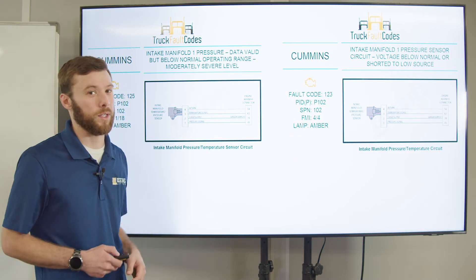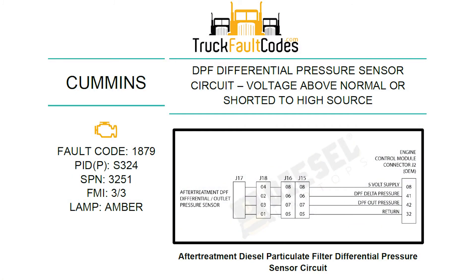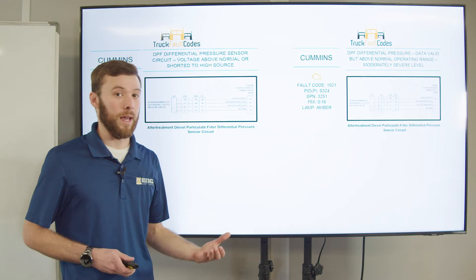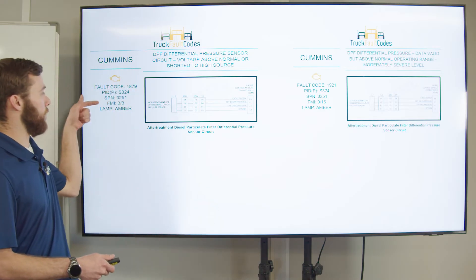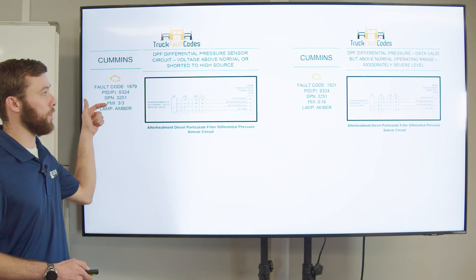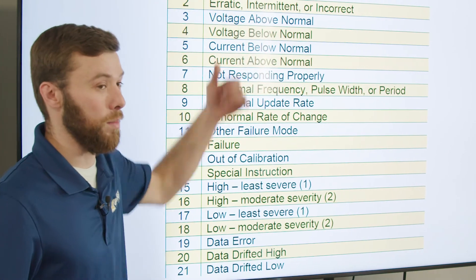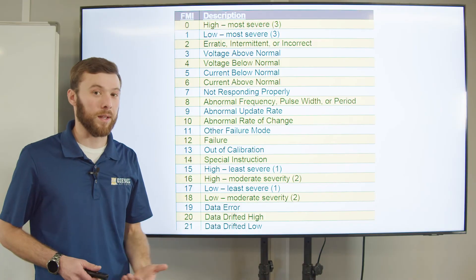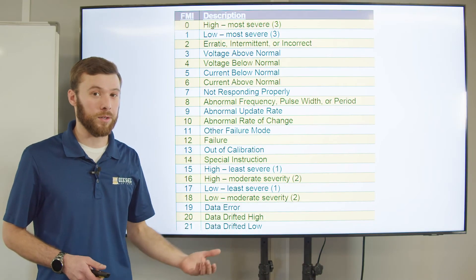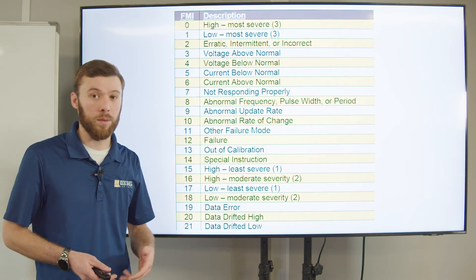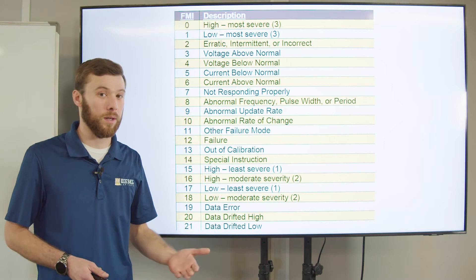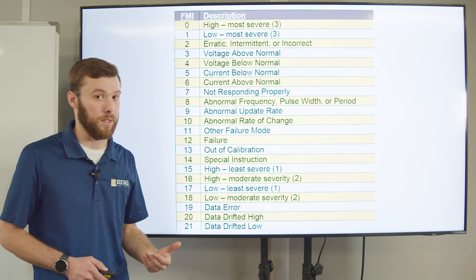Let's look at a few more examples. Here we have DPF differential pressure sensor circuit — 'voltage above normal or shorted to a high source.' When we look at that, we can look at the FMI, which is number three. If we look at our FMI list, we see number three is 'voltage above normal.' That's most likely indicating, again, an electrical fault — a sensor problem, a wiring problem, or it could even be a module problem that's monitoring that sensor.